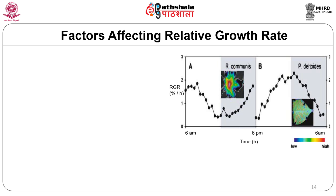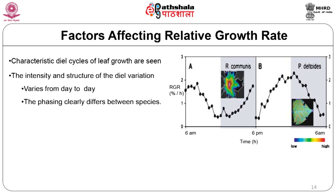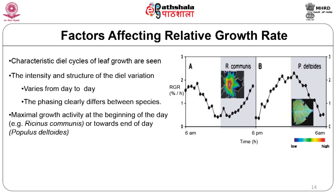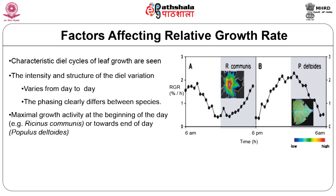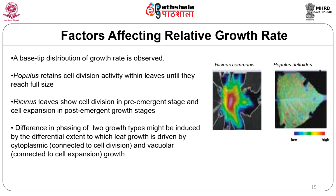Leaves, which are the main sites of photo-assimilation, play an important role in whole-plant growth dynamics. Dicot species show characteristic diurnal cycles of leaf growth with growth intensity varying from day to day. For example, leaves of Nicotiana tabacum and Arabidopsis thaliana showed maximal growth activity at the beginning of the day, with a base-to-tip gradient. Growth is driven by either cytoplasmic (cell division) or vacuolar (cell expansion) processes.